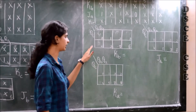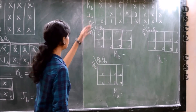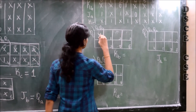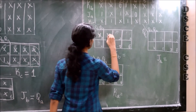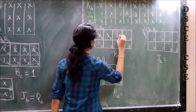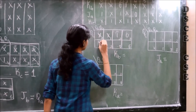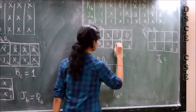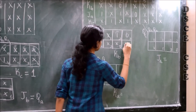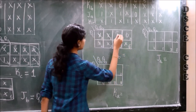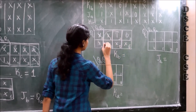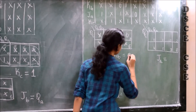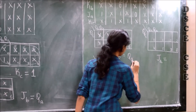Now drawing the K-map for KB, the values are don't care, don't care, 1, 0, and remaining don't cares. Thus we get a quad form. The value of KB becomes QA.